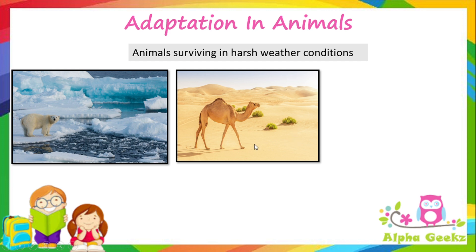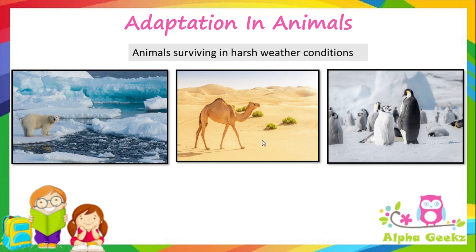In deserts there is almost no water, rain, trees, or plants. Deserts are covered by sand and are the driest places on Earth. Next we have the Antarctic region, which is the coldest, driest, and windiest of the continents. It is mainly a polar desert, and the temperature here can get as low as minus 60 degrees Celsius in winter.